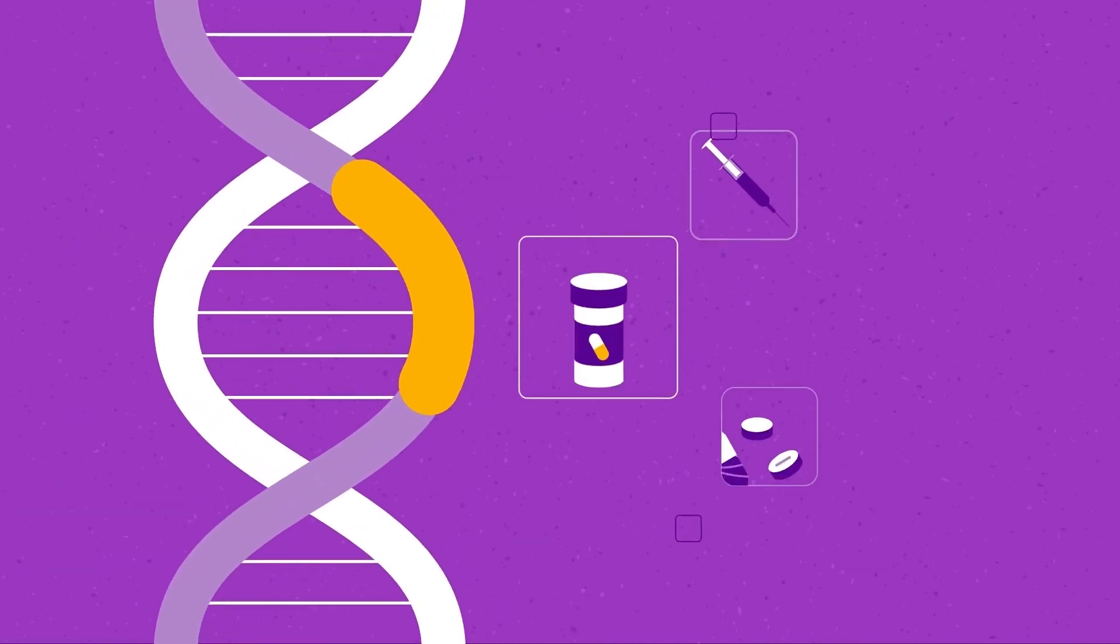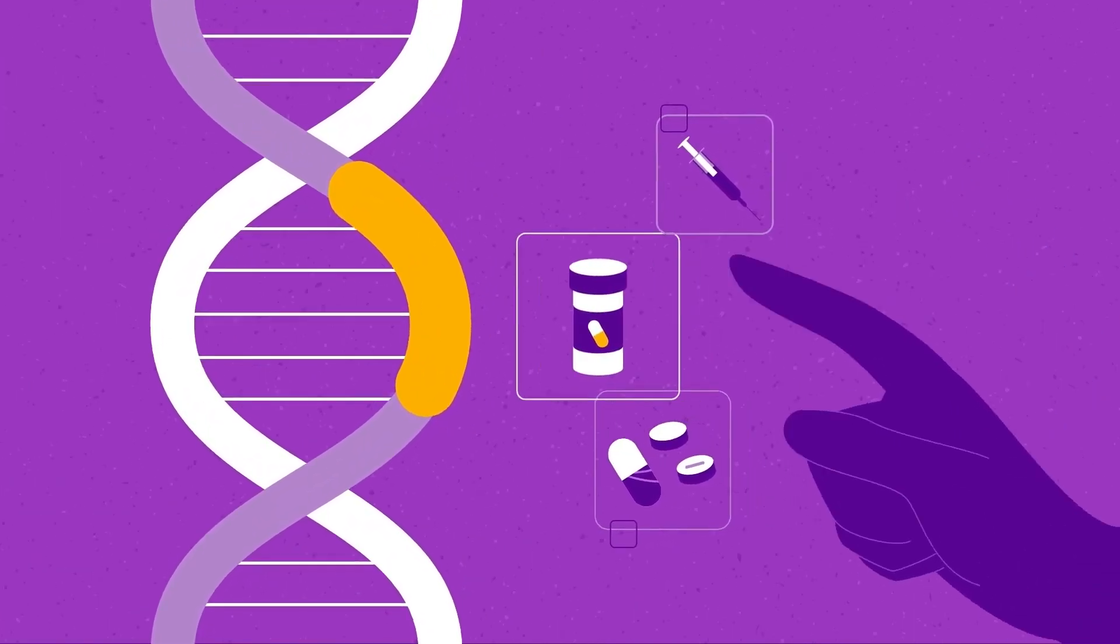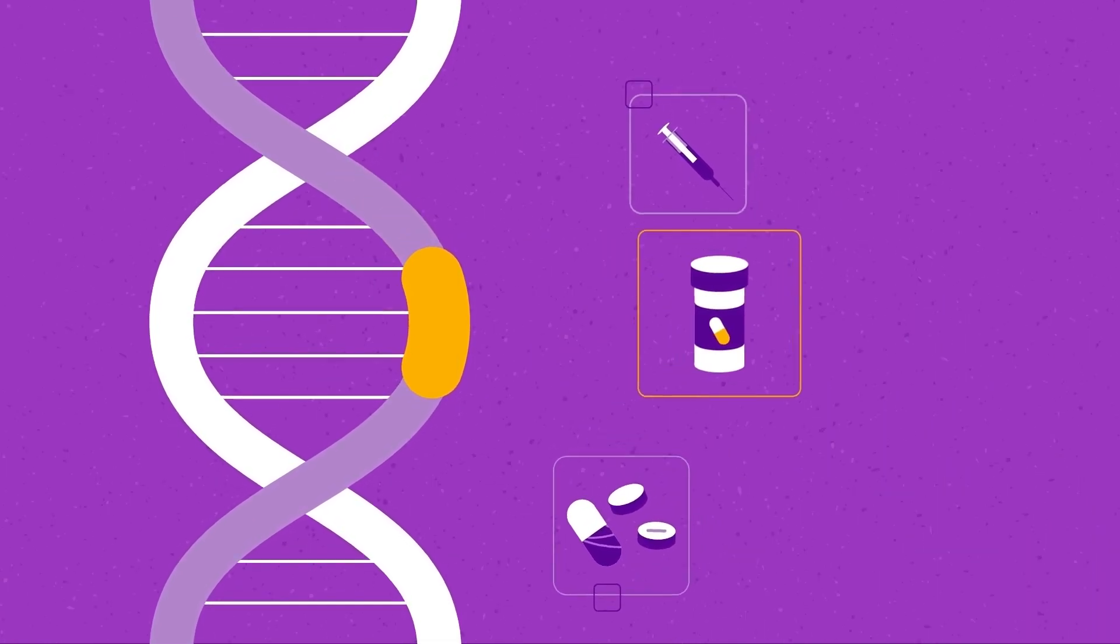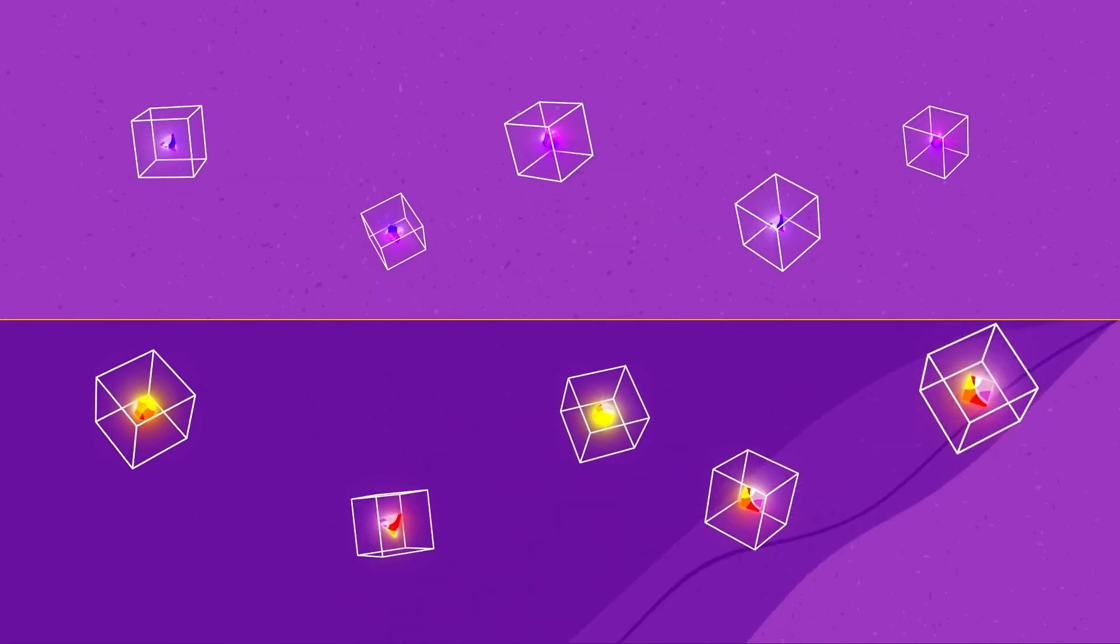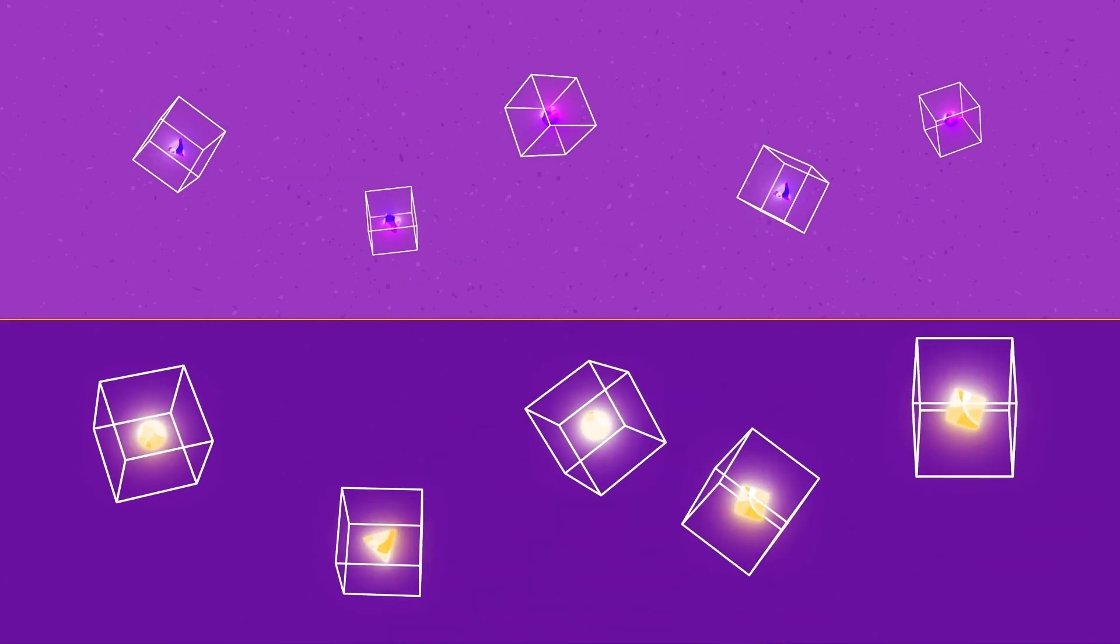In order to try to stop the cancer growing these faulty genes have to be brought under control. This can be done by selecting the right treatment. Almost half of cholangiocarcinoma patients have genetic changes which can potentially be acted upon.